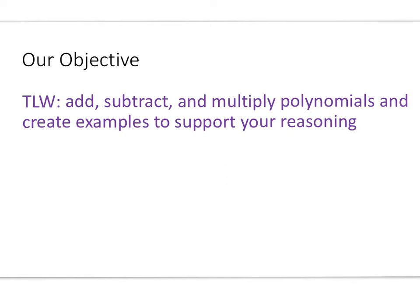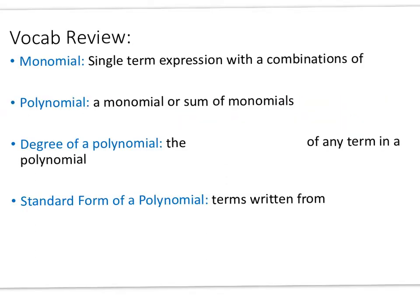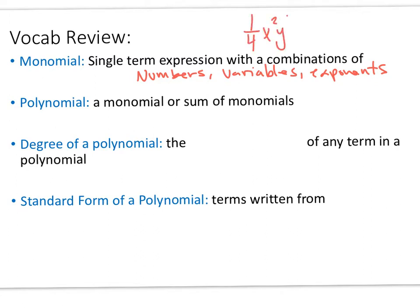Before we get started, we need to do a little vocab review. A monomial is a single-term expression with combinations of numbers, variables, and exponents. For example, one-fourth x squared y to the fourth is a monomial — just a single term expression. A polynomial, on the other hand, is a monomial or the sum of monomials. So we could take one-fourth x squared y to the fourth and add something to it, like 2xy to the third.